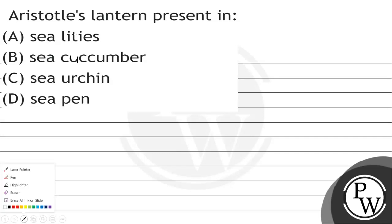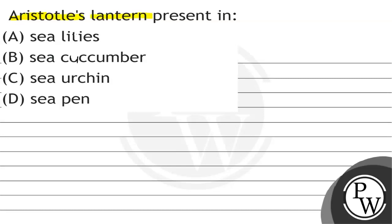Hello, children! Let's see this question. The question says: Aristotle's lantern is present in? First one is sea lilies, second one is sea cucumber, third one is sea urchin, and fourth one is sea pen.